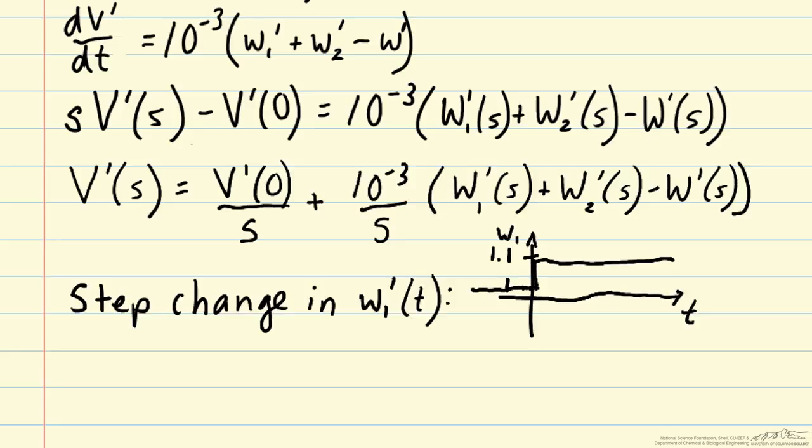The way that we represent a step in Laplace transform is with 1 over s. So here the amplitude of the step is 0.1 and then the step at time 0 is represented by the 1 over s. And we will have no deviation in w2 and no deviation in the outlet stream w.